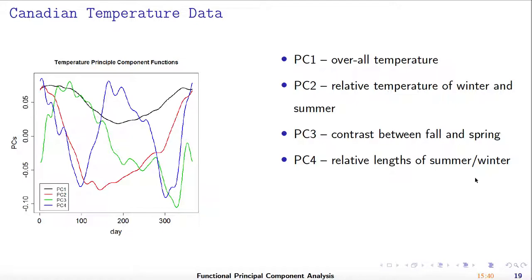This gives a message that the first FPC is always positive. The second FPC is positive in one part and negative in another. The third FPC crosses zero twice, and the fourth FPC crosses zero three times. This pattern is actually very commonly found in many other applications as well.